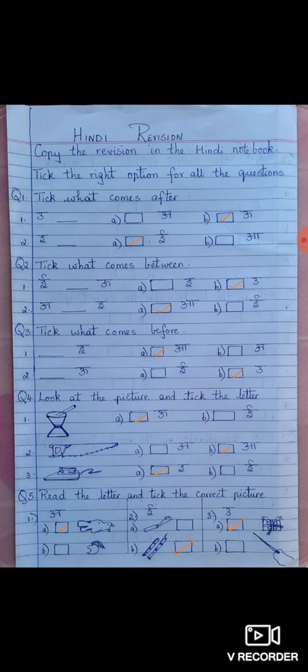Third, the letter is OO. You are given two pictures UPAHAR And SUI. So which picture starts with OO? It is UPAHAR. Not SUI. The word UPAHAR has OO. So you will put a tick mark to option A.